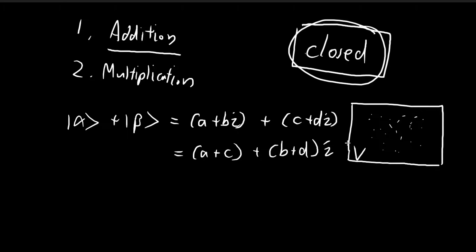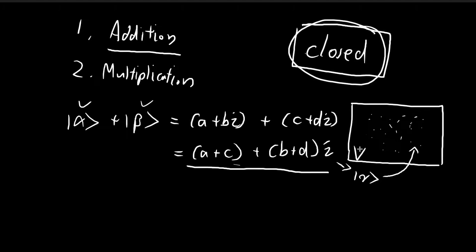Closure means that if I bring out two elements from the vector space and add them, the result is also within the set. For complex numbers, adding two complex numbers gives another complex number that is also within the set. This is the first requirement: you need to define addition in such a way that closure is achieved.